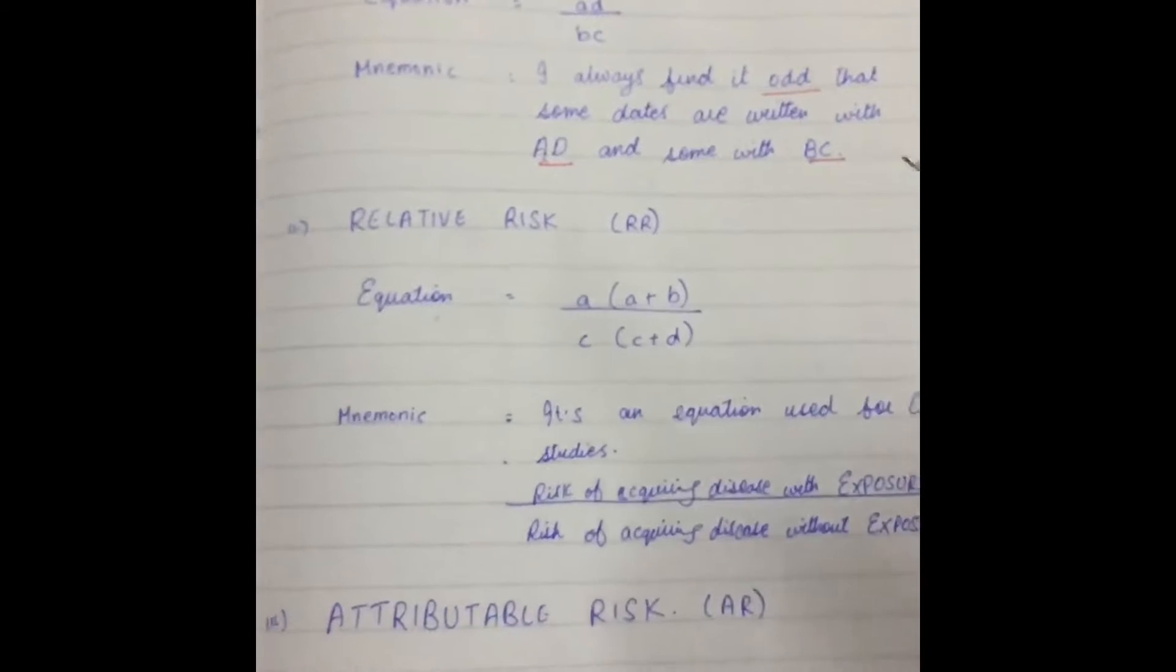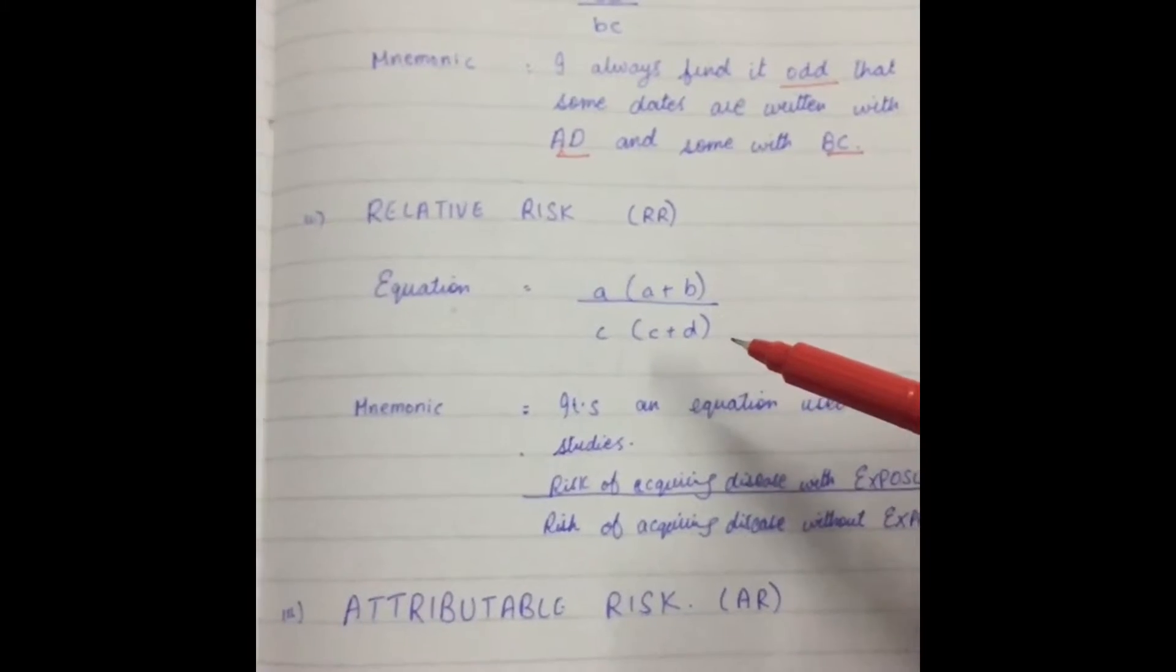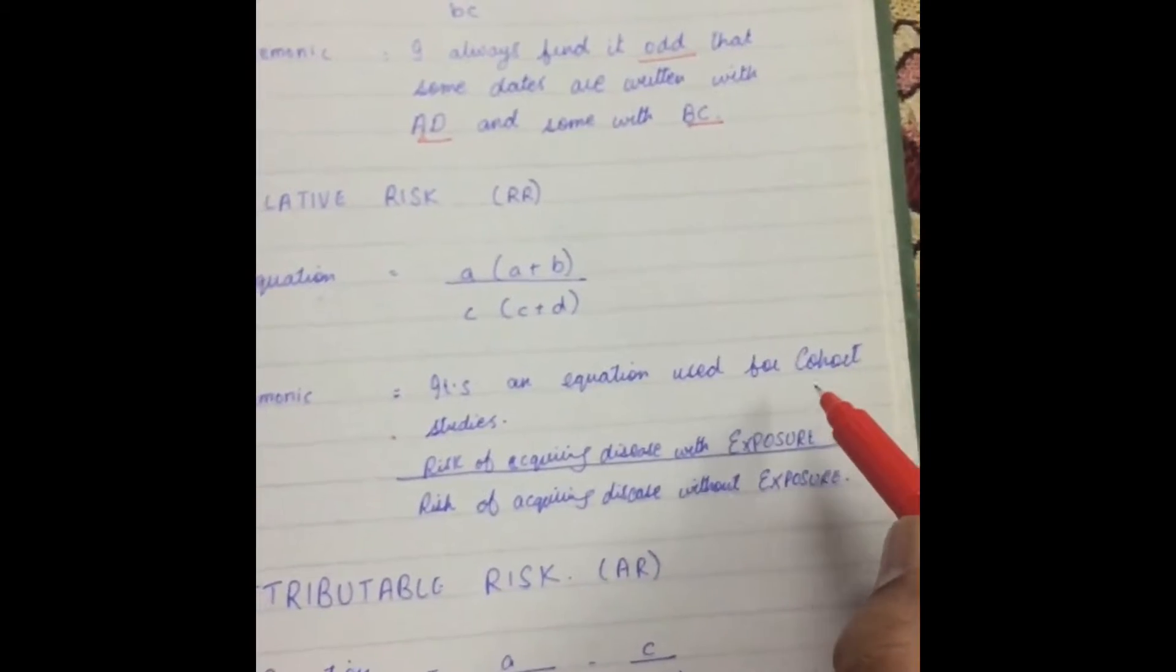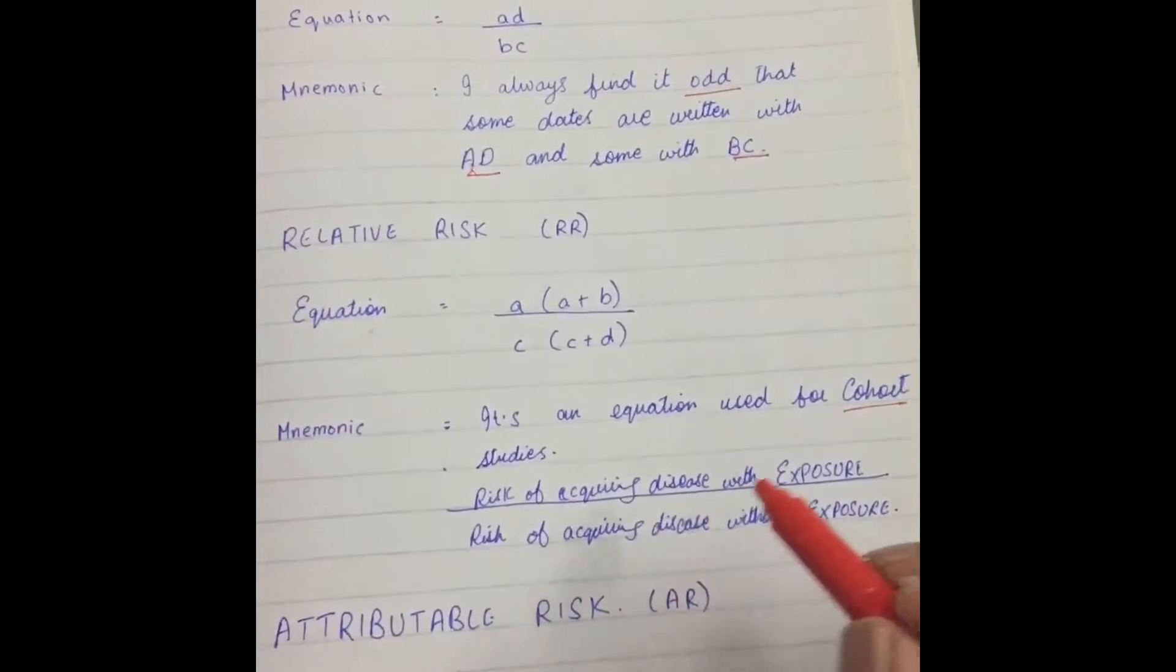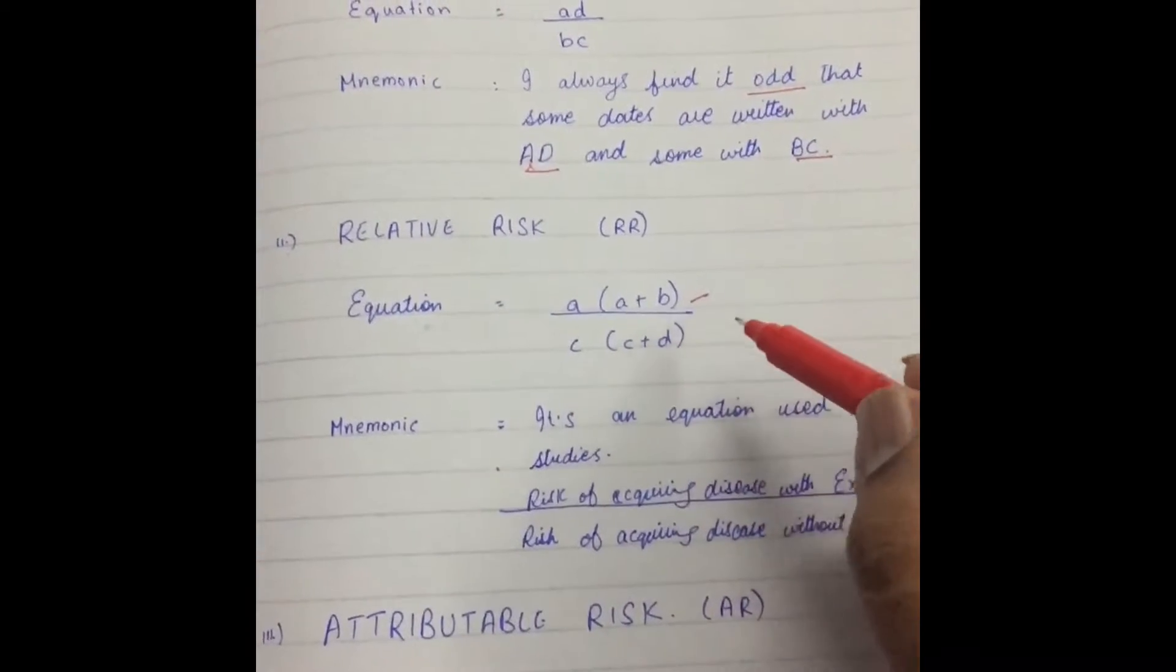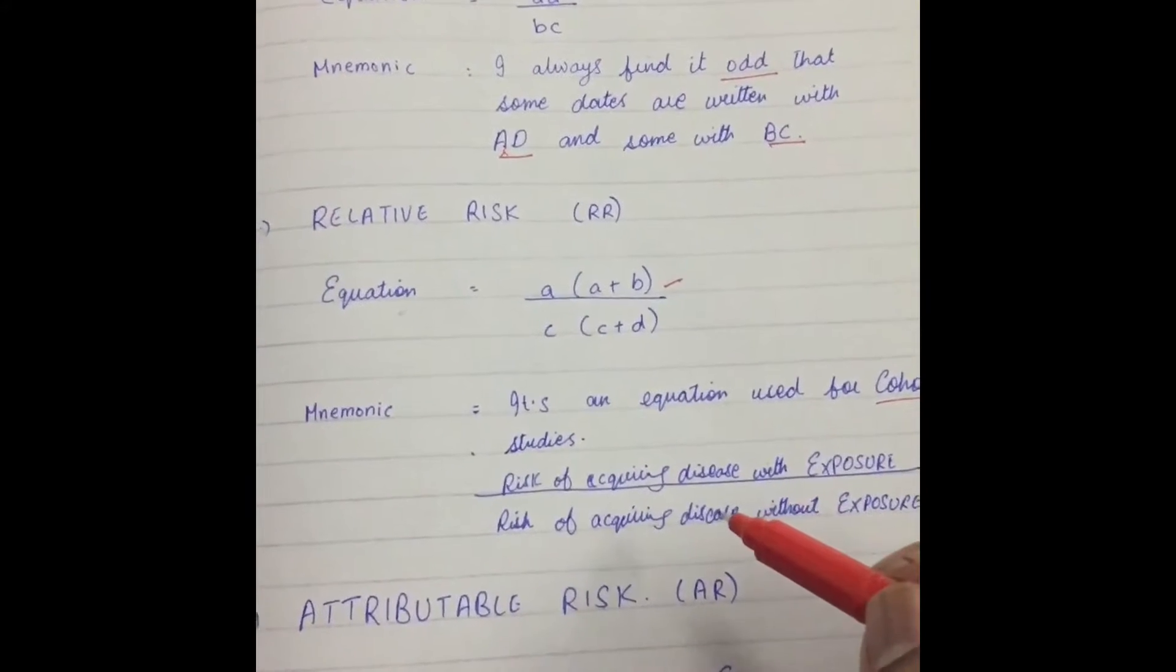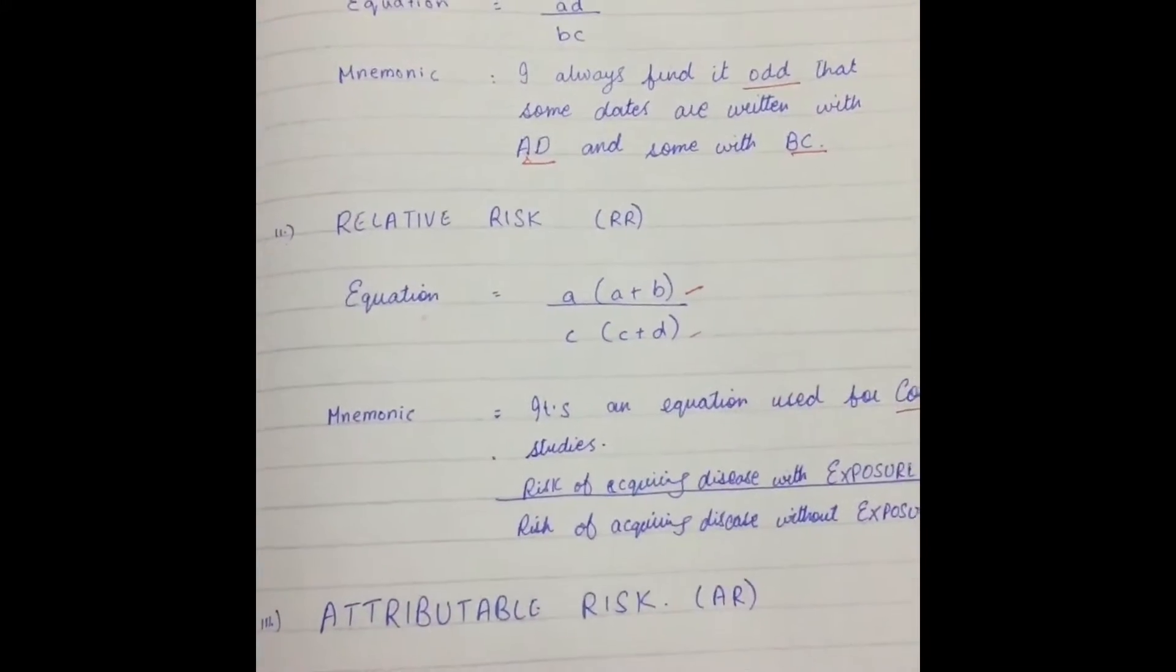Next is Relative Risk. Its equation is A, A plus B, divided by C, C plus D. Mnemonic: It's an equation that is used for cohort studies, in which we follow people that acquire disease that had an exposure. That is this group, A, A plus B, and then we follow the people that acquire disease and they never had the exposure, C, C plus D.